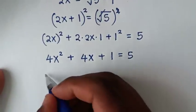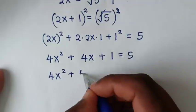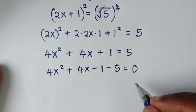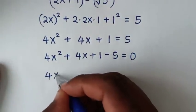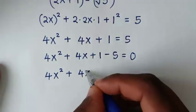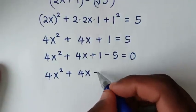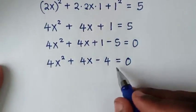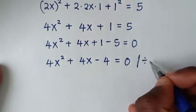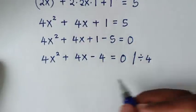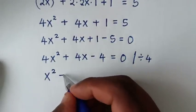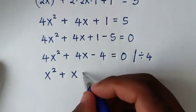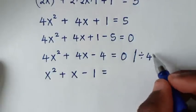Taking 5 to the left side: 4x² + 4x + 1 minus 5 equals 0, giving 4x² + 4x minus 4 equals 0. This is divisible by 4, so dividing through by 4 gives x² + x minus 1 equals 0.